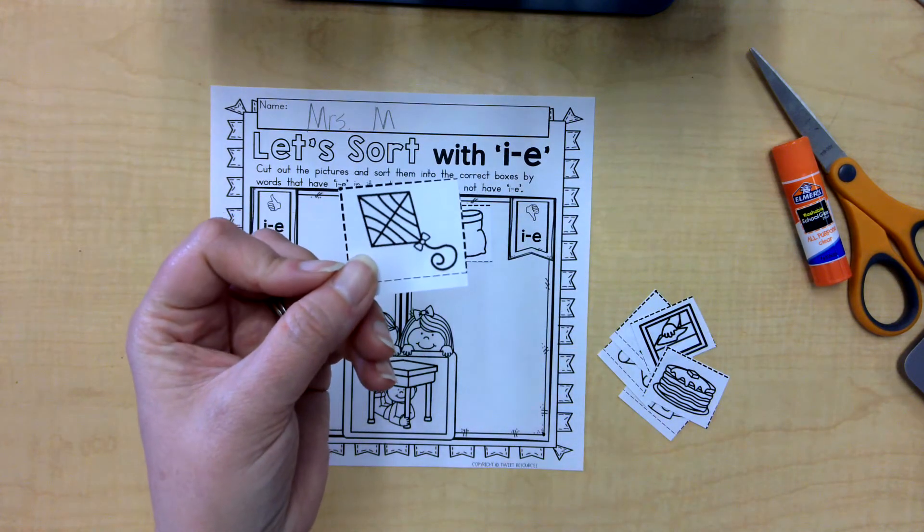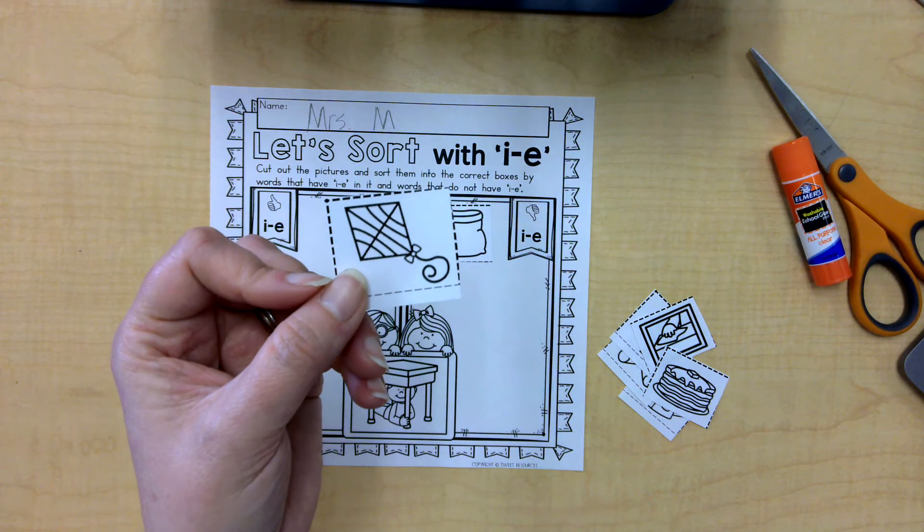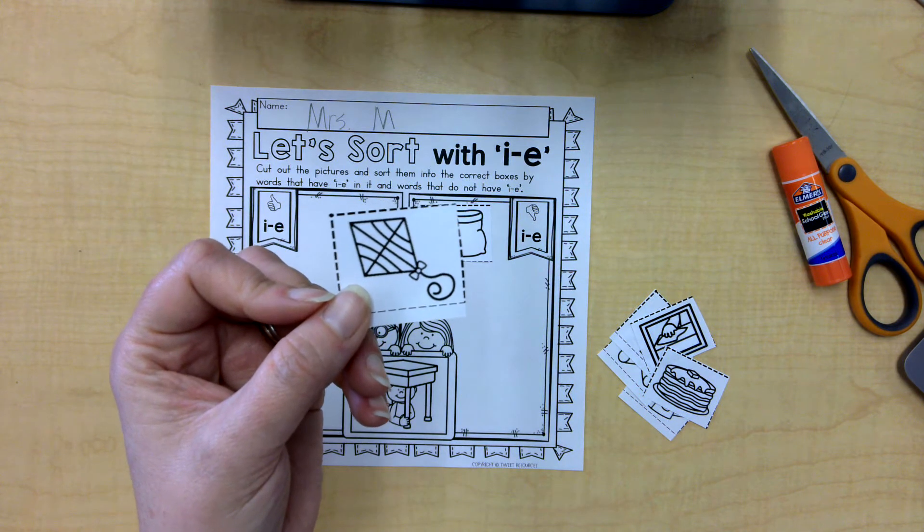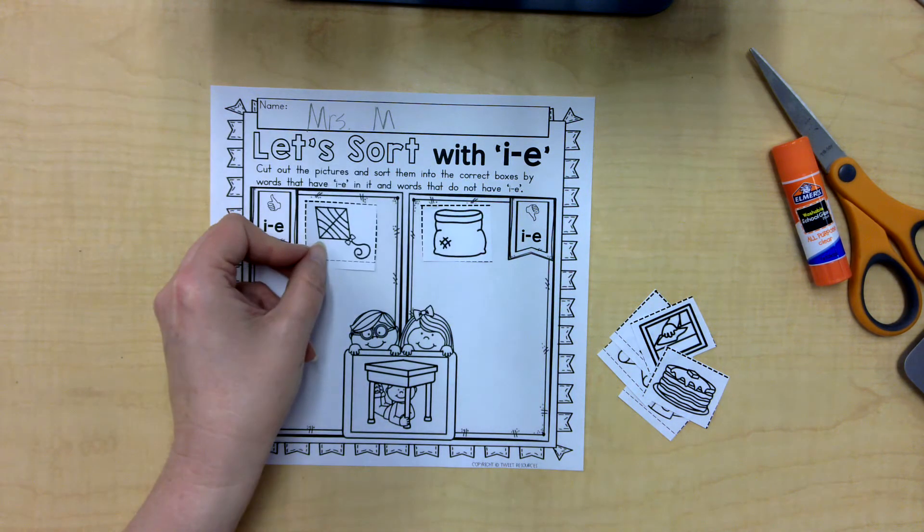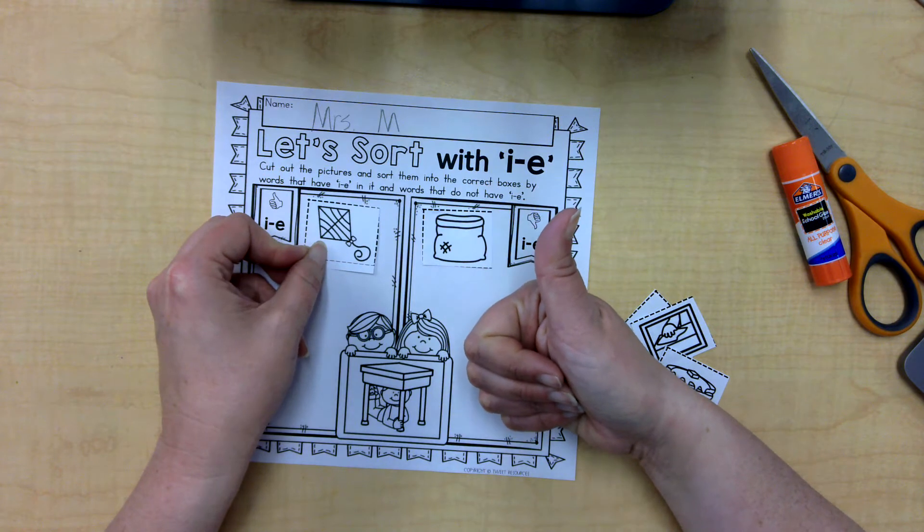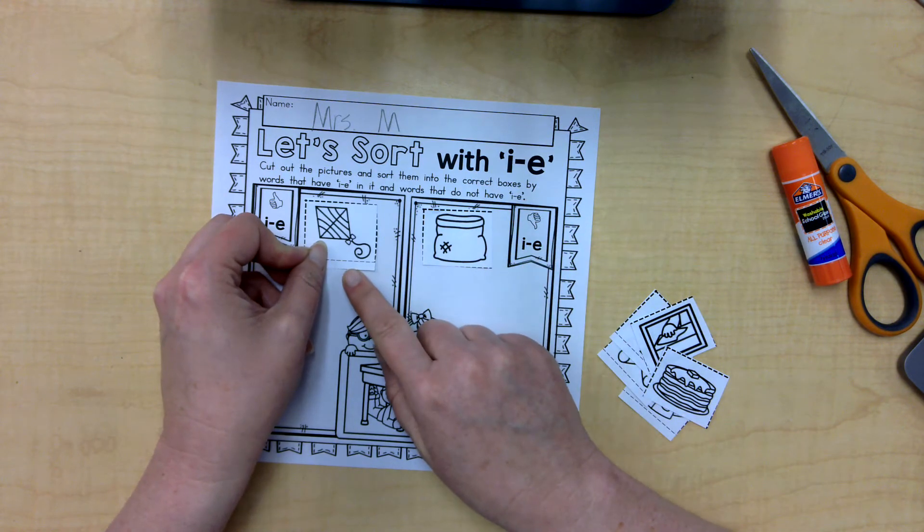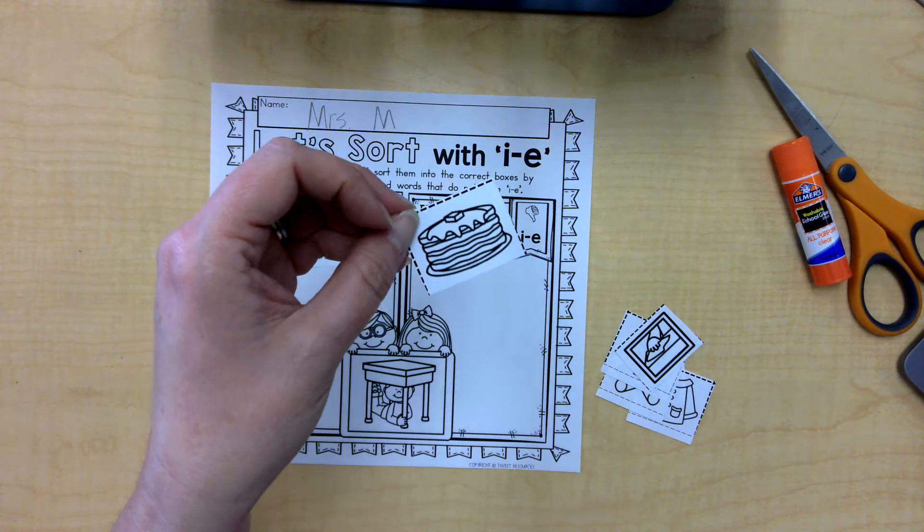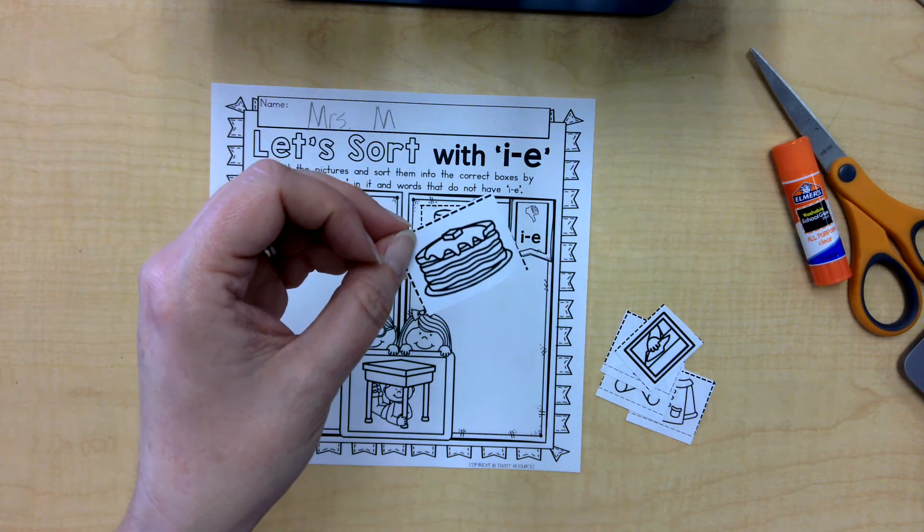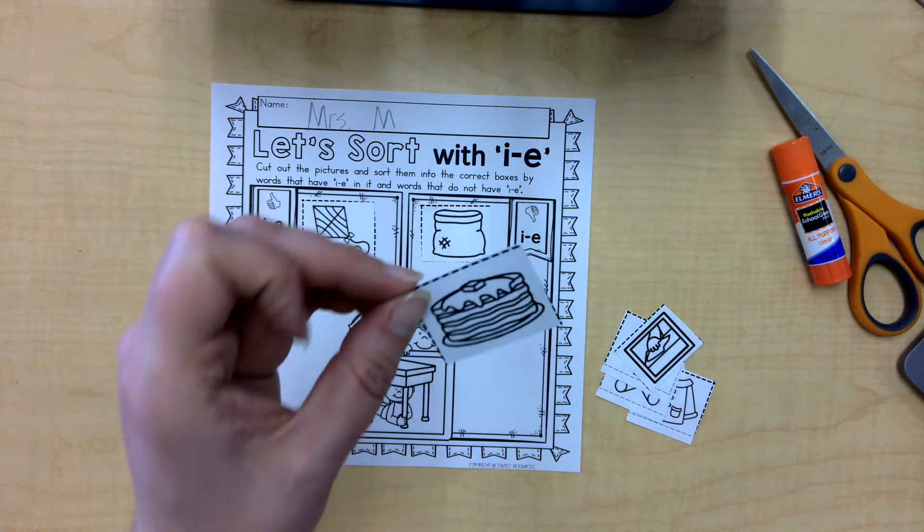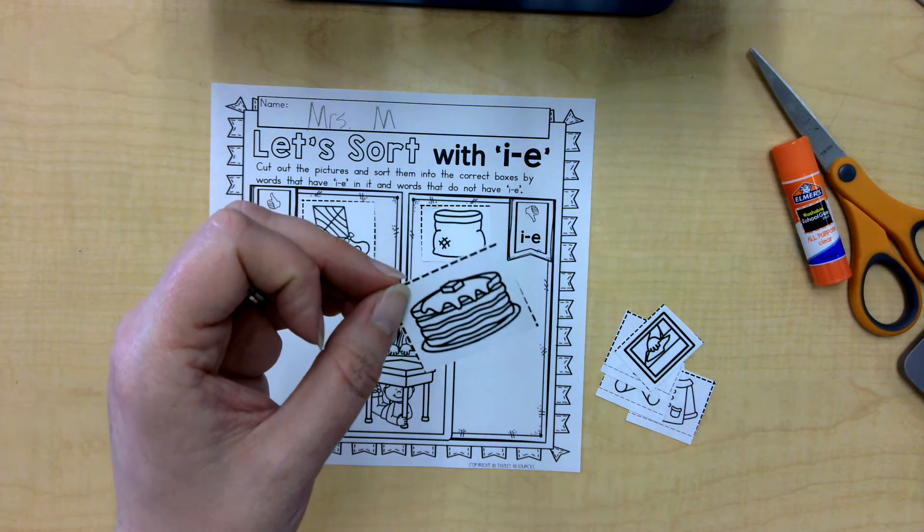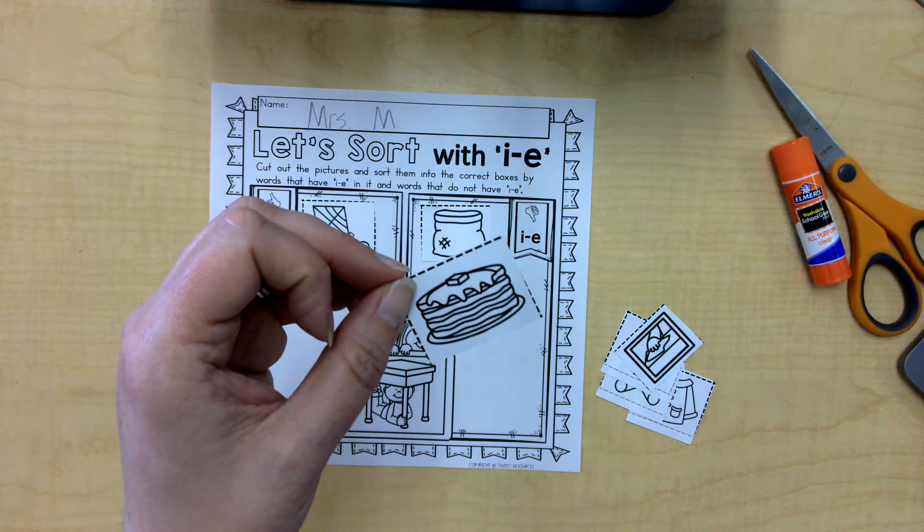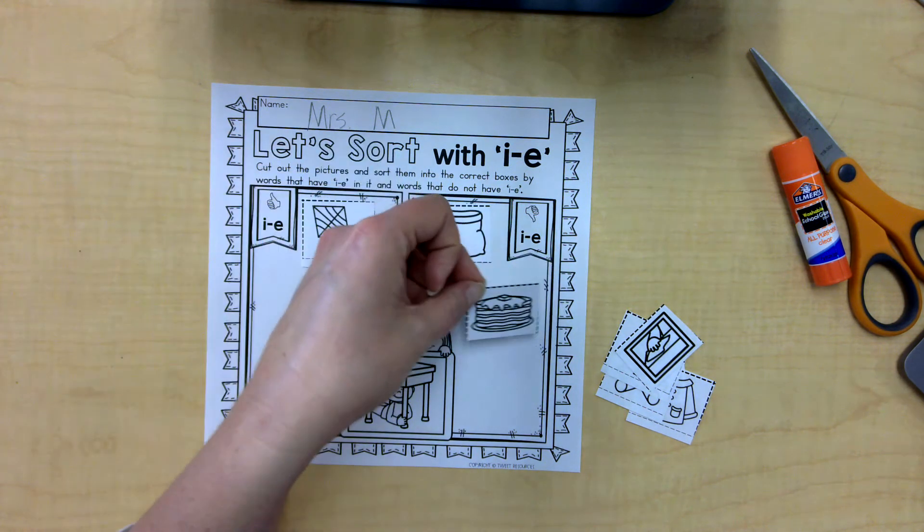This is a kite. K-I-T. Oh, I do hear an I saying his name. Superhero I. K-I-T. This is a stack of pancakes. Delicious! Yum! S-t-ack. No, I don't hear any superhero I's in there. I'm going to put it over here.